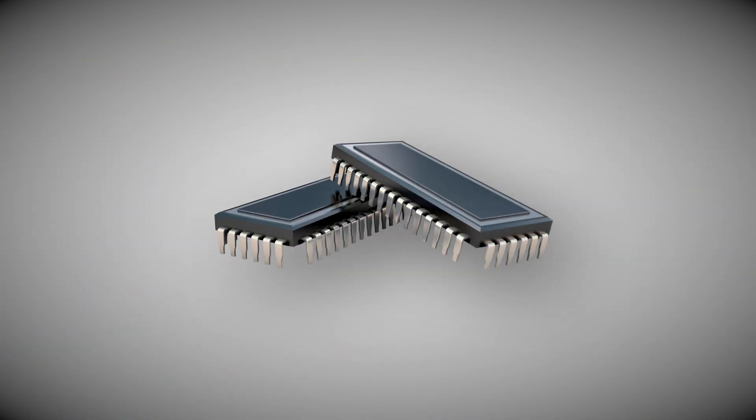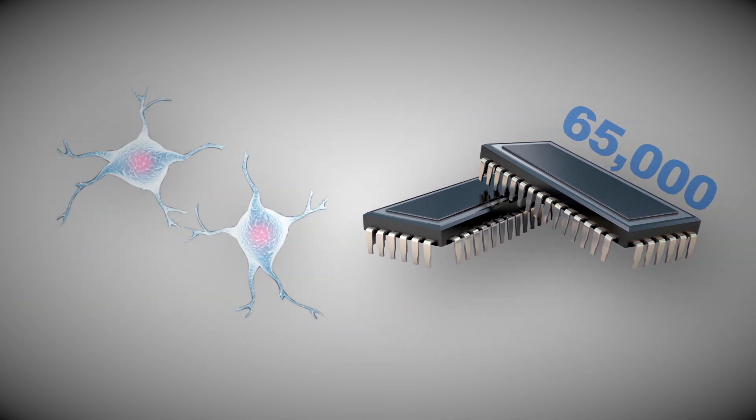At IBM, the engineers made two computer chips that contained about 65,000 electronic synapses, which are like the connections between nerve cells in our brain.